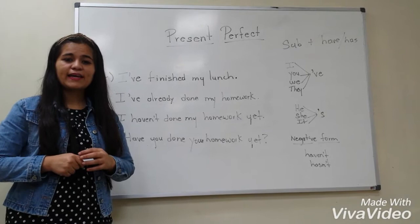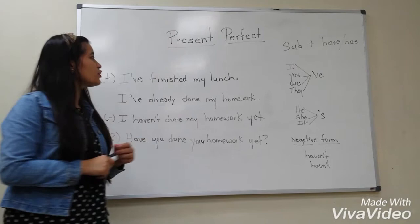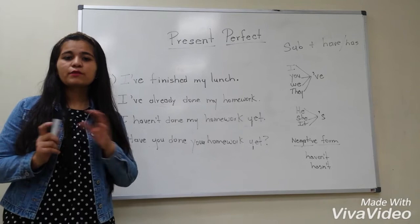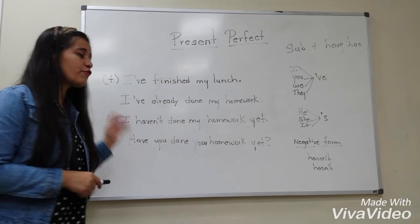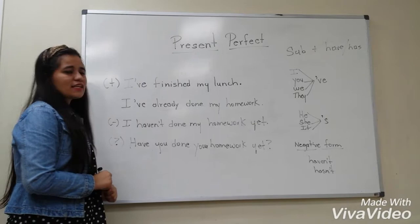Hello, everyone. I am Miss Lopez. Our lesson today is the present perfect. Do you know the present perfect? Let me help you. When do we use the present perfect? We use the present perfect when we are talking about the recent past, but we don't say when the things happened. For example, look at the first sentence: I finished my lunch. You don't know when I finished my lunch — that is present perfect.